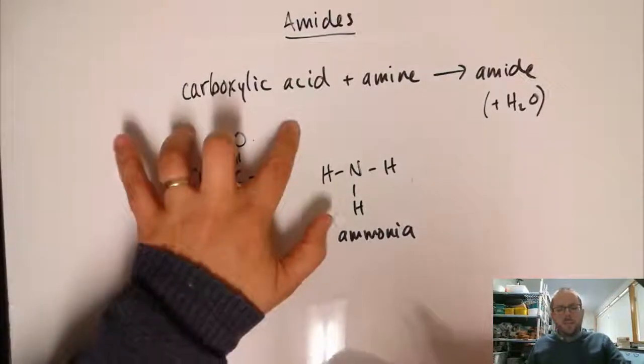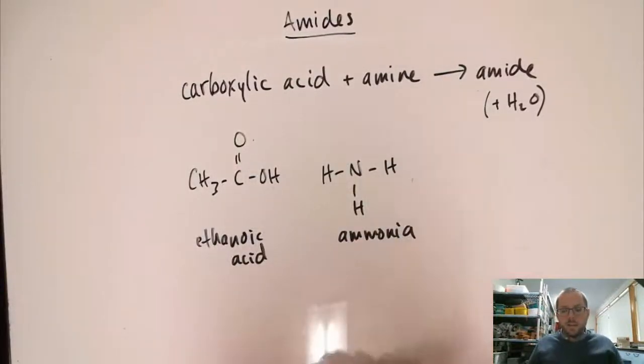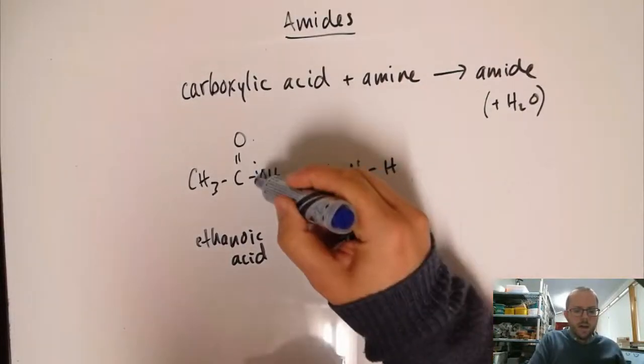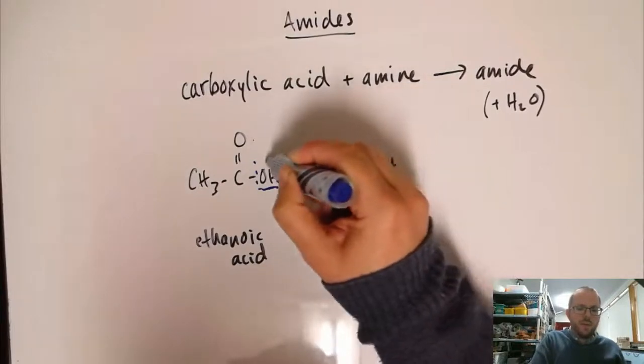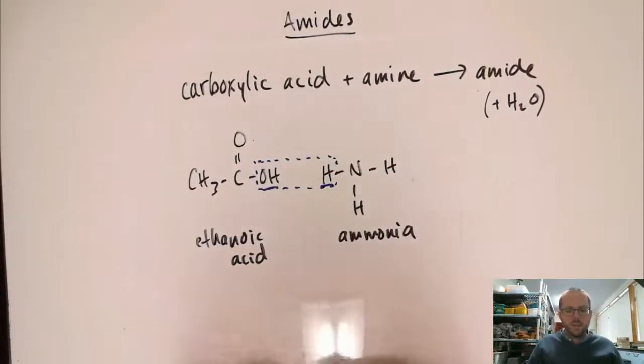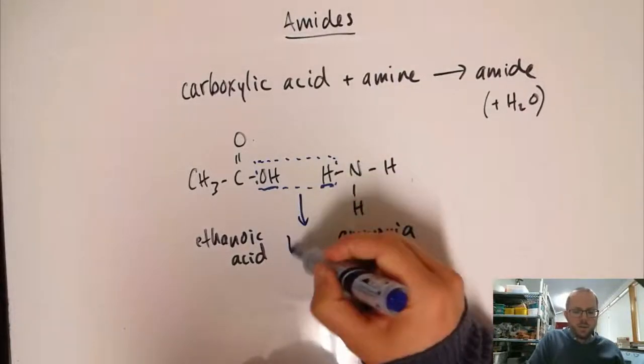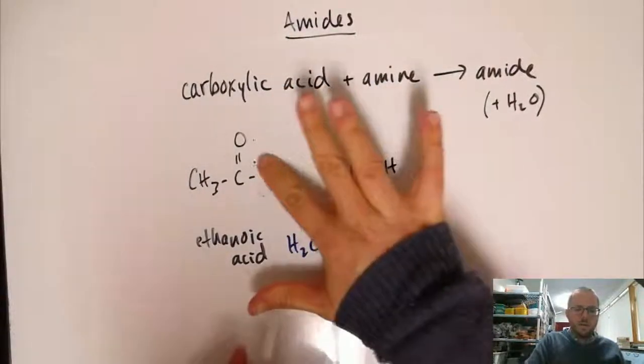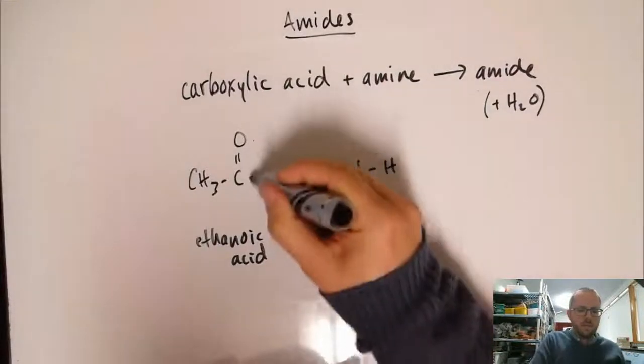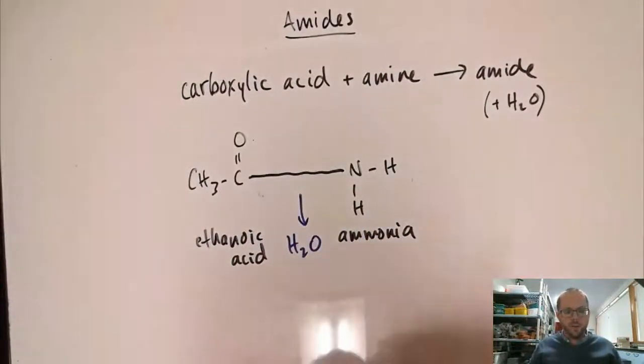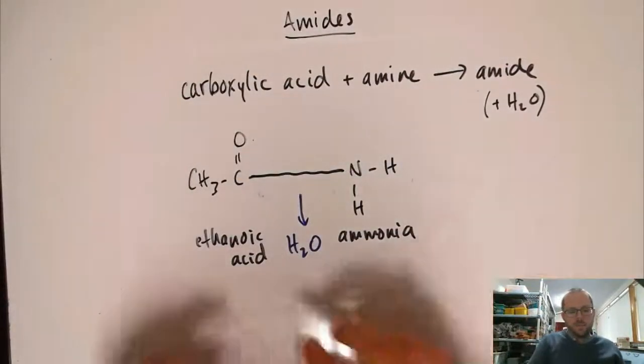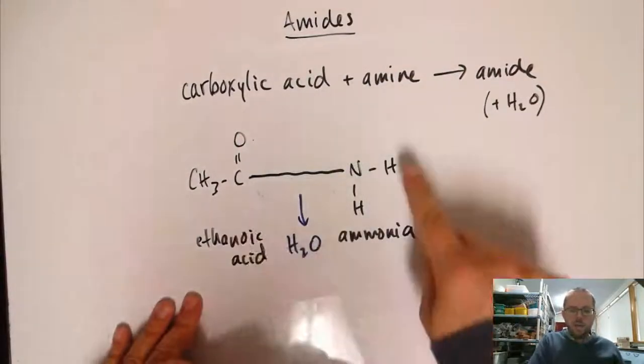We take a carboxylic acid and we take an amine and we combine them together. Just like when we're forming an ester, this is a condensation reaction. We take the OH group that's here and the H that's over here, and we remove them and make a new connection between what is left over. This comes out as water, and then we make the connection between the carbon and the nitrogen there. We end up with the amide and water.